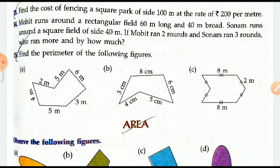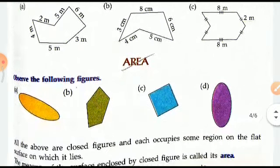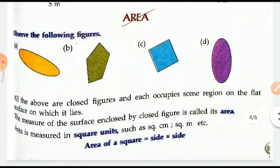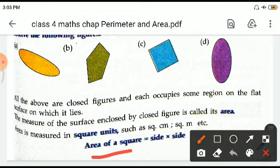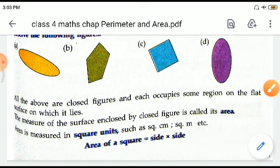And this is how you will be doing this exercise. Now there are some irregular figures, you just keep on adding the sides to get the perimeter. Next we come to the area. All above are closed figures and each occupies some region on the flat surface on which it lies. The measure of this surface enclosed by a closed figure is called its area. The area is measured in square units. So area of a square is side into side.